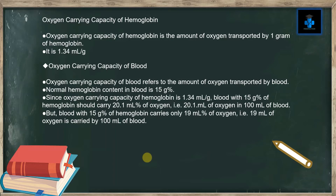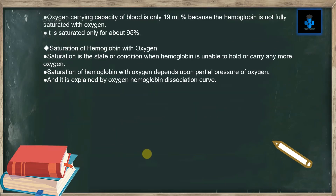The oxygen carrying capacity of blood refers to the amount of oxygen transported by blood. Normal hemoglobin content in blood is 15 grams percent. Since the oxygen carrying capacity of hemoglobin is 1.34 mL per gram, blood with 15 grams of hemoglobin should theoretically carry 20.1 mL of oxygen per 100 mL of blood. However, blood with 15 grams of hemoglobin actually carries only 19 mL of oxygen per 100 mL of blood. So the oxygen carrying capacity of blood is only 19 mL percent.